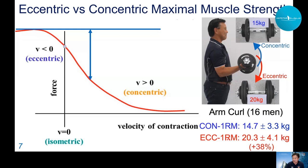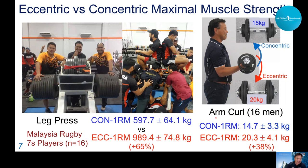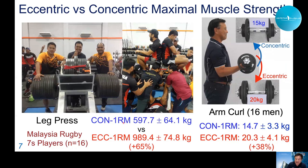This is also the case for leg press. In a study with Malaysian Rugby Sevens players, they achieved a concentric 1RM of 600 kilograms, but an eccentric 1RM of about 1000 kilograms — 60% greater than concentric. So eccentric contraction has a greater capacity to produce force.